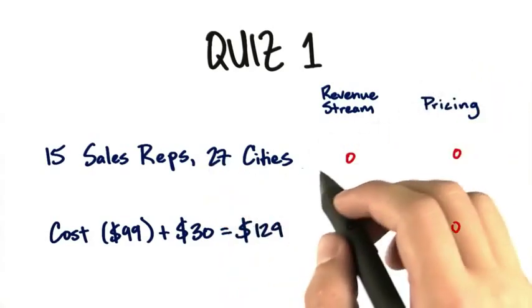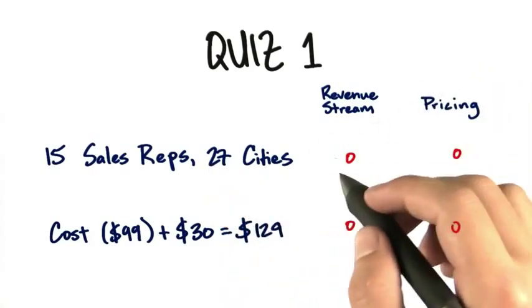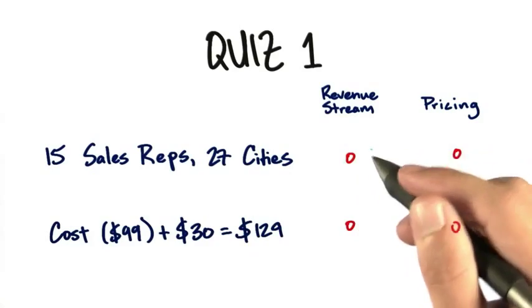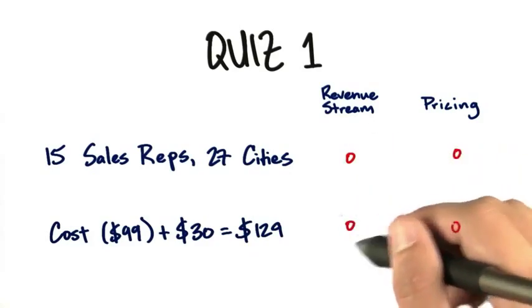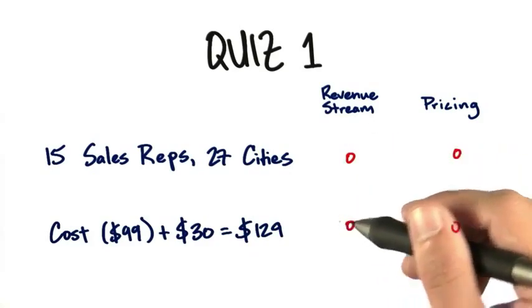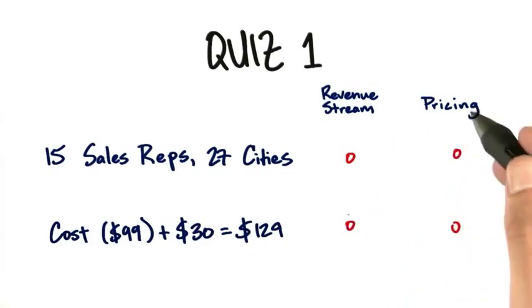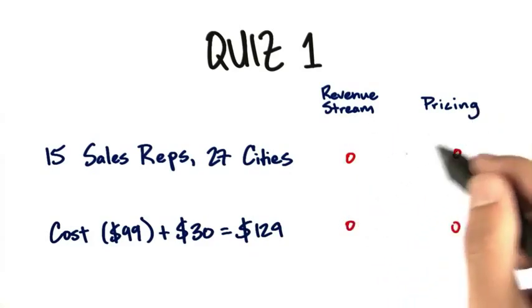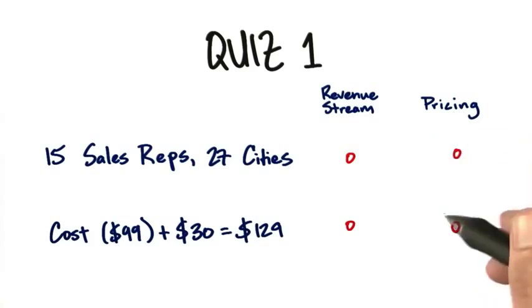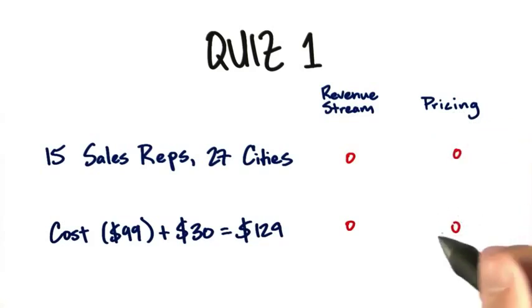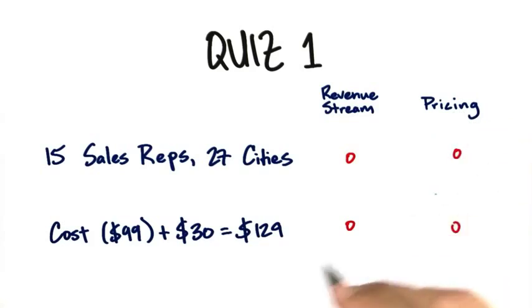Are the sales reps in 27 cities the revenue stream, or is the cost-plus $30 the revenue stream? Was the pricing tactic the sales reps, or was it the cost plus the gross margin?